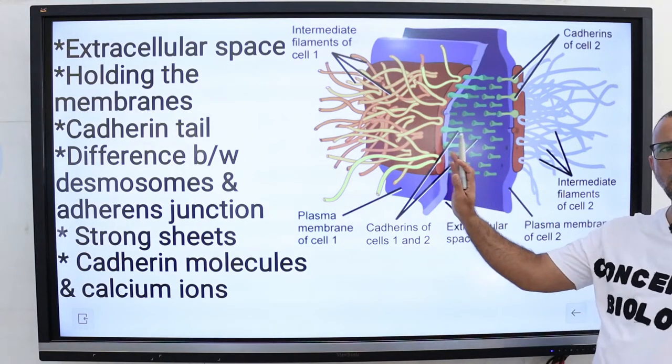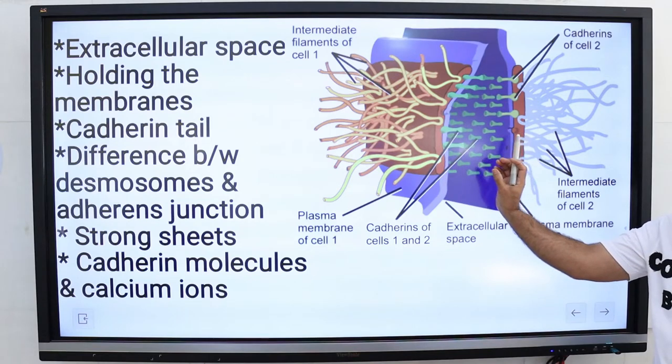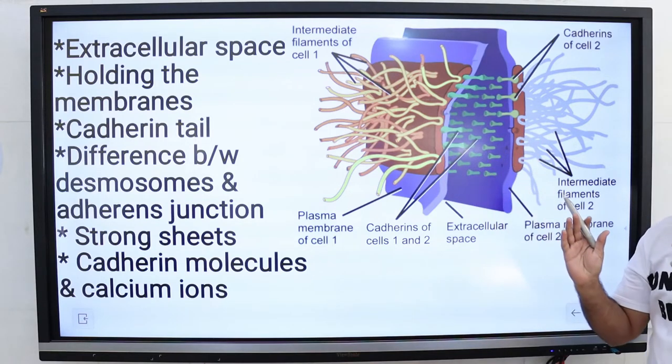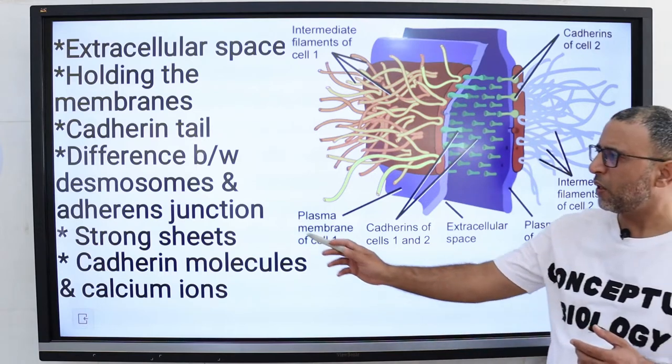In epithelial cells, these junctions are small disc-shaped and are called spot welds between adjacent cells. Desmosomes which are present in heart are more complicated because they are mixed with adherence junctions.